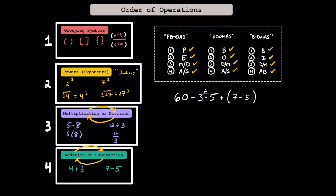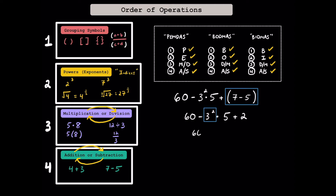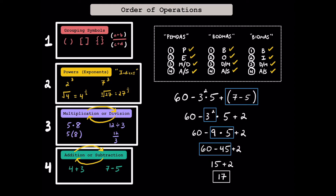Here we can see subtraction, an exponent, multiplication, addition, subtraction, and a grouping symbol. While we have so many choices, we have to start with the grouping symbol. Our grouping symbol tells us that we must solve what's inside the parentheses first. Solving what's in the parentheses, 7 minus 5 is just going to be positive 2. Now that we don't have any more grouping symbols, the power or exponent will come next. Since 3 squared is 9, from the three operations we have left, multiplication is the most important. Since 9 times 5 is 45, since addition and subtraction are equally important, we go from left to right. 60 minus 45 is 15, and with only one operation left, our final answer here is going to be 17. Following the order of operations, this would be our solution.